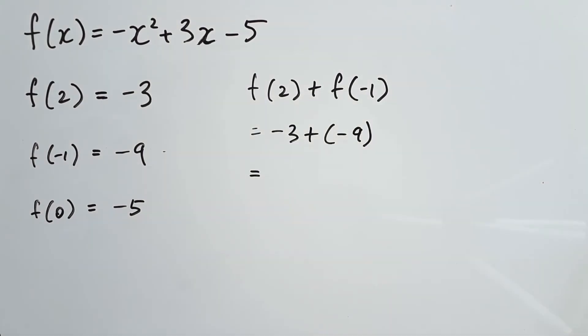So we can say it's negative 3 plus negative 9. Because remember, we're not just referring to the title of f of x anymore. We're referring to a very specific chapter, f of 2 and f of negative 1, and their respective page numbers, you could say. So negative 3 plus negative 9 gives us negative 12.